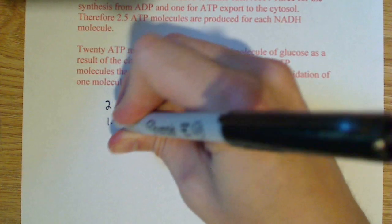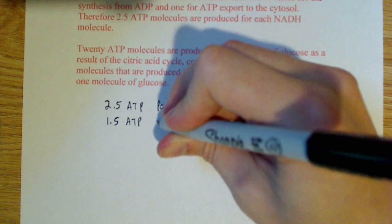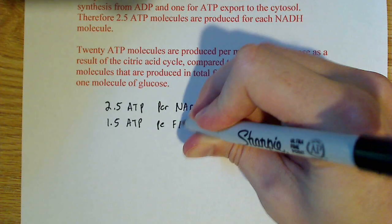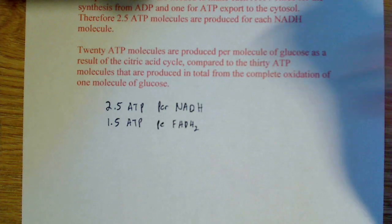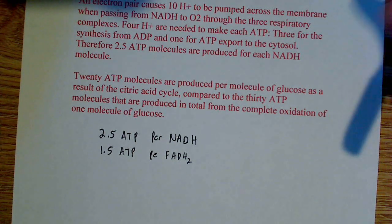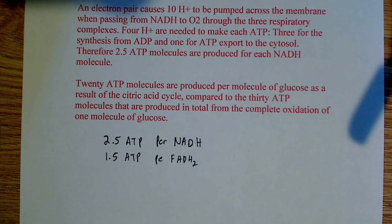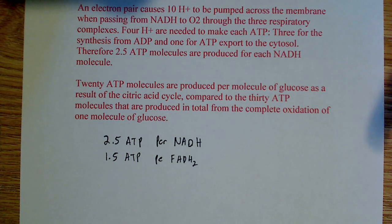All right? And you have 1.5 ATPs, and that's per FADH2. And it says here that 20 ATP molecules are produced per molecule of glucose as a result of the citric acid cycle. So how did they come up with that number?